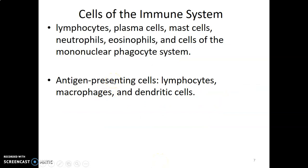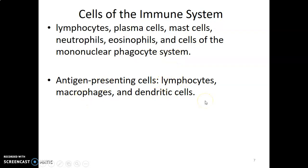We have different cells of the immune system: white blood cells, whether granulocytes or agranulocytes; mast cells; members of the monocyte-phagocytic system; and antigen-presenting cells. These include macrophages, dendritic cells, and Langerhans cells.